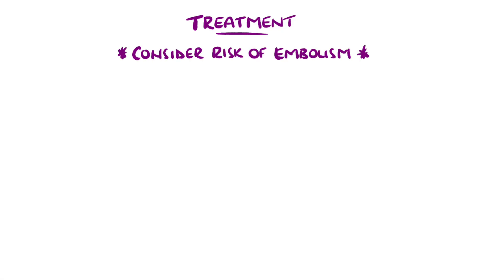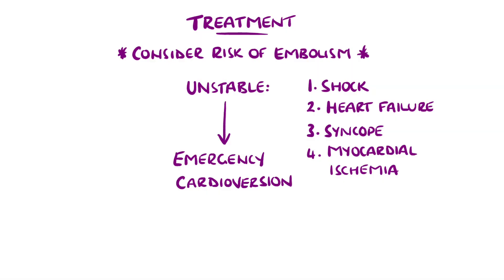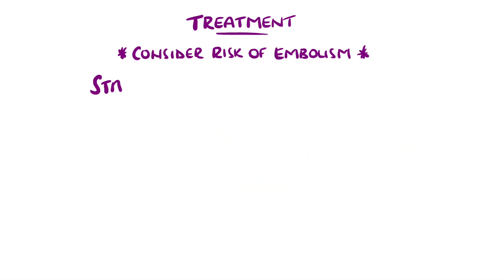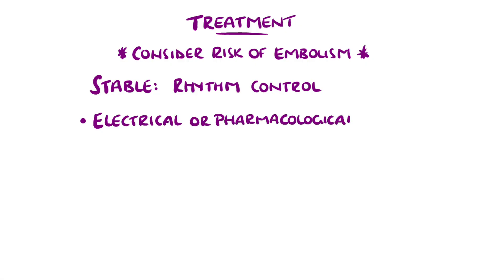The risk is that converting someone back to sinus rhythm may cause a blood clot to be pumped through the systemic circulation, generating the complications we mentioned. In unstable patients, defined as shock, acute heart failure, syncope, or myocardial ischemia, patients would receive an emergency cardioversion, as not doing so could potentially lead to death. In stable patients however, anticoagulation is an important factor, and rhythm or rate control strategies are options. Rhythm control involves cardioverting the patient back into sinus rhythm through a shock or through medication, with drugs such as flecainide or amiodarone.